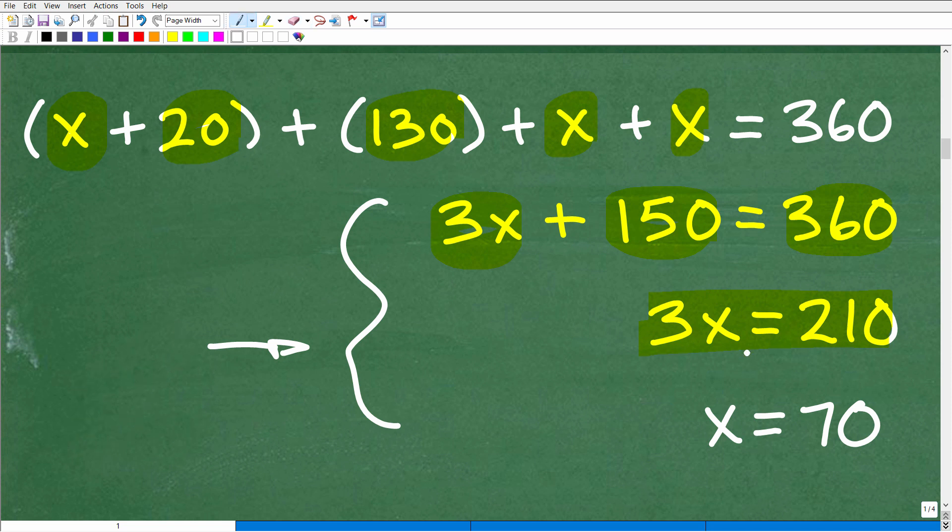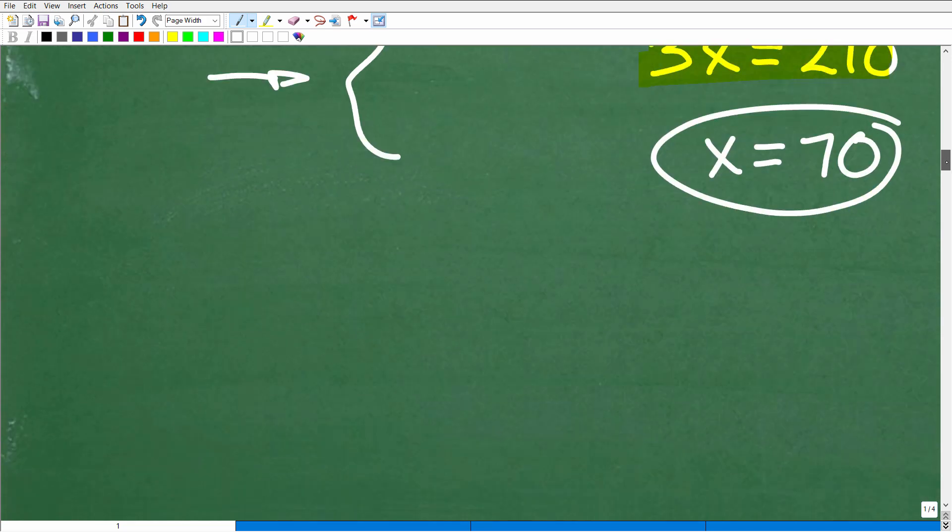All right, so how do we solve for x? We have 3x is equal to 210, so we just need to divide both sides of the equation by 3, and we get x is equal to 70. Okay, super easy.